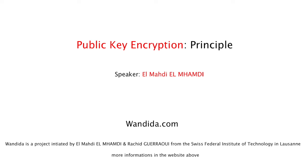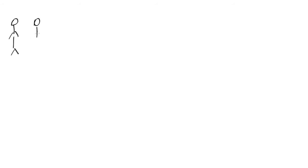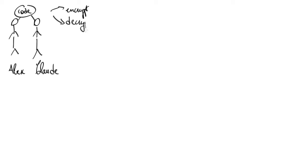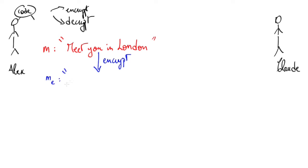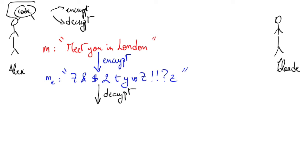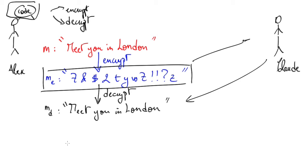Privacy and secret correspondence are important human rights. If two people, Alex and Claude, want to converse privately, they should agree on a code. With this code they will encrypt and decrypt their messages. After they physically meet and agree on the code, Alex can encrypt a message like 'meet you in London' before sending it to Claude. Claude will then decrypt it using their shared code and obtain the original message.